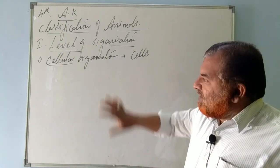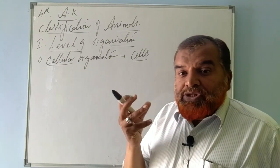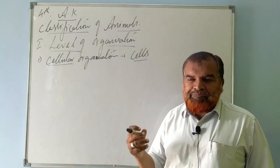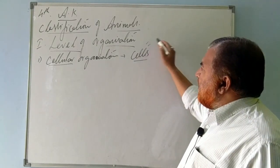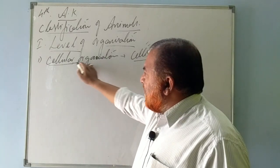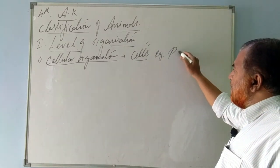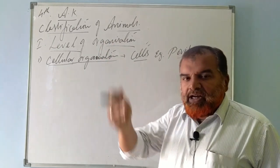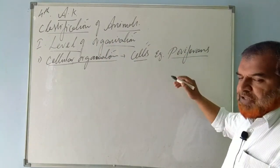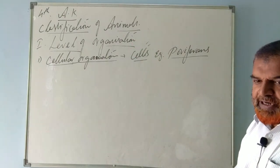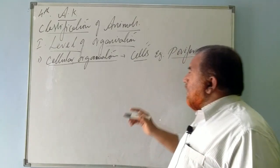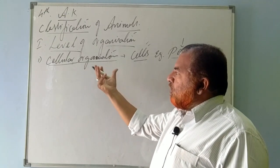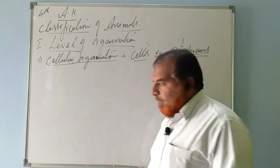At the cellular level of organization, various physiological functions are performed by different cells — few cells perform respiration, few perform circulation, few perform digestion. Such a level of organization is known as cellular level of organization. The example is Porifera — animals which belong to Porifera, like sponges. Sponges belong to cellular level of organization.